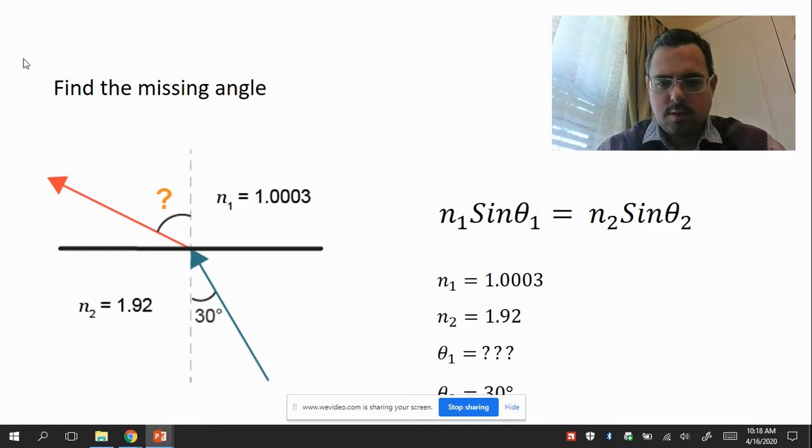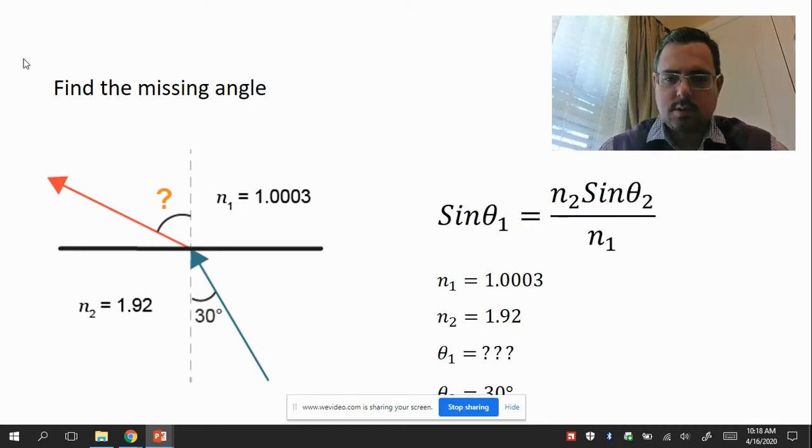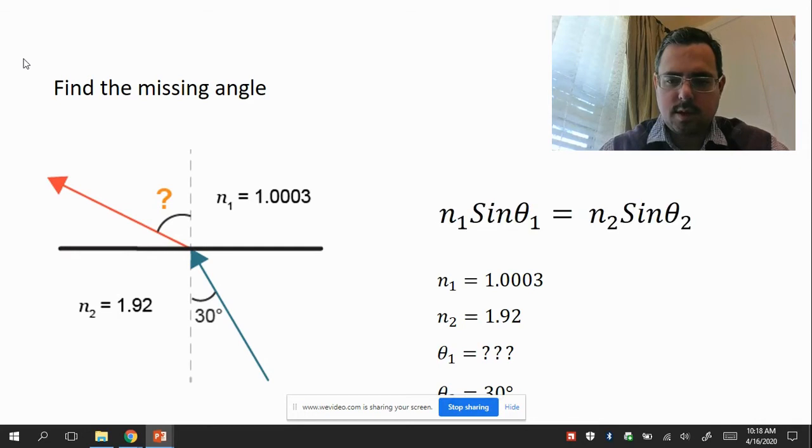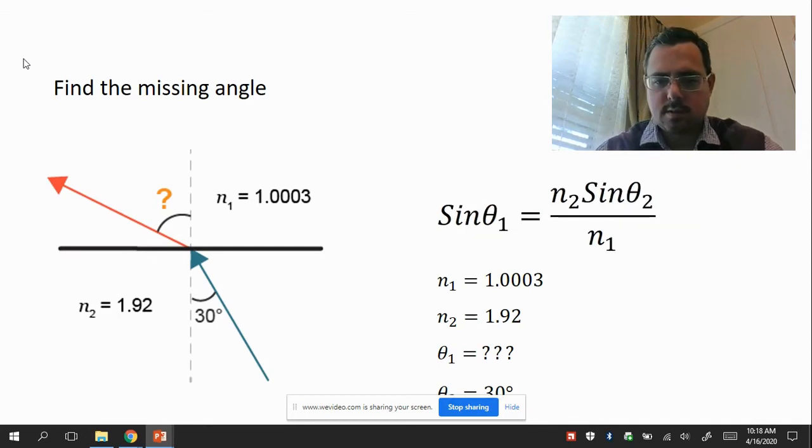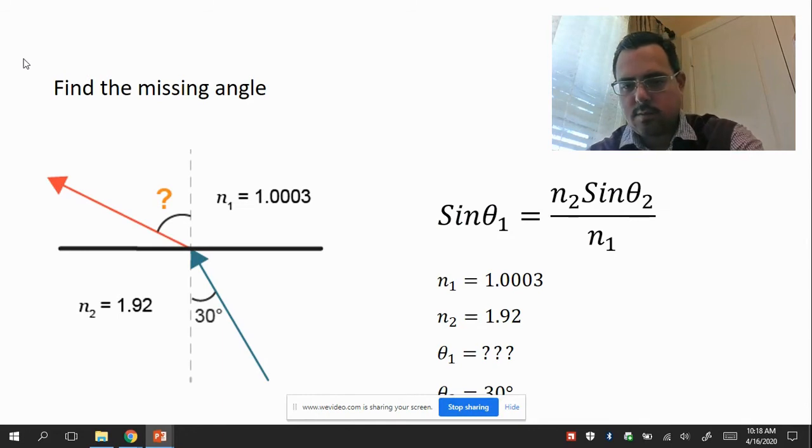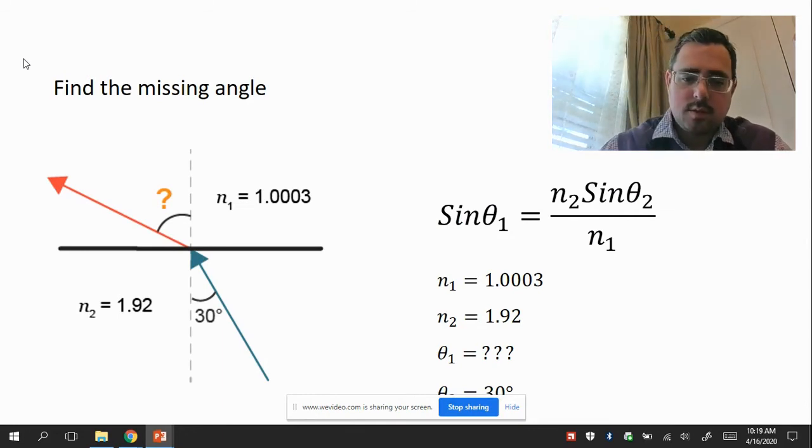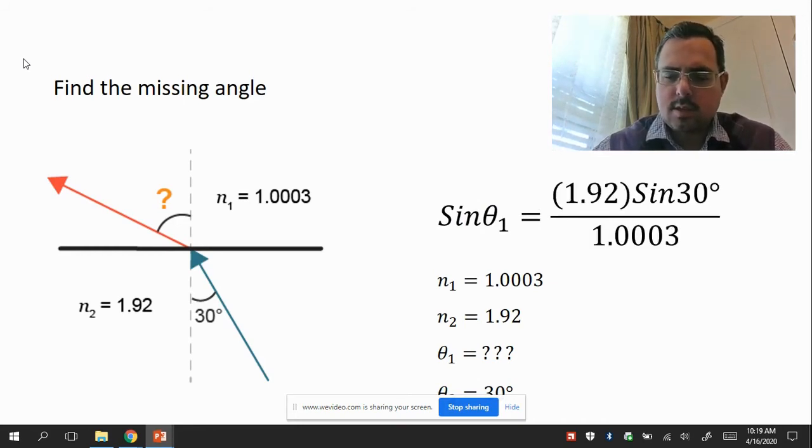So we're going to move, using algebra, as many things to the right side of the equal sign as possible. If you look what I did there, I just divided both sides by N1 and it canceled out on the left side and gave us an N1 on the bottom of the equation on the right side. So there's the equation we use. Then we plug in the numbers. It looks like this.